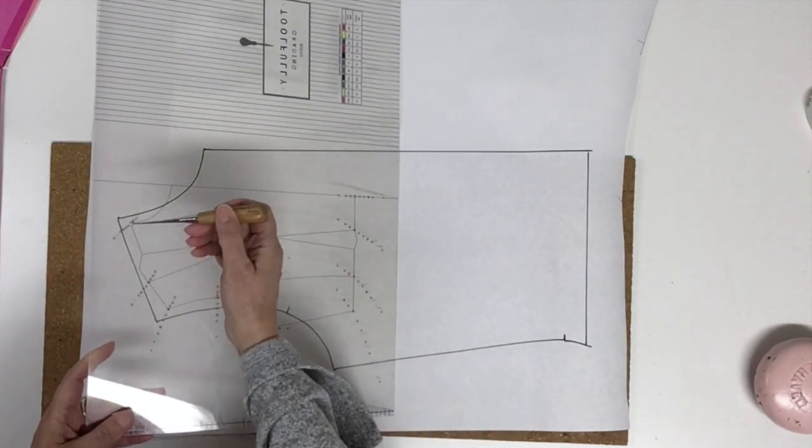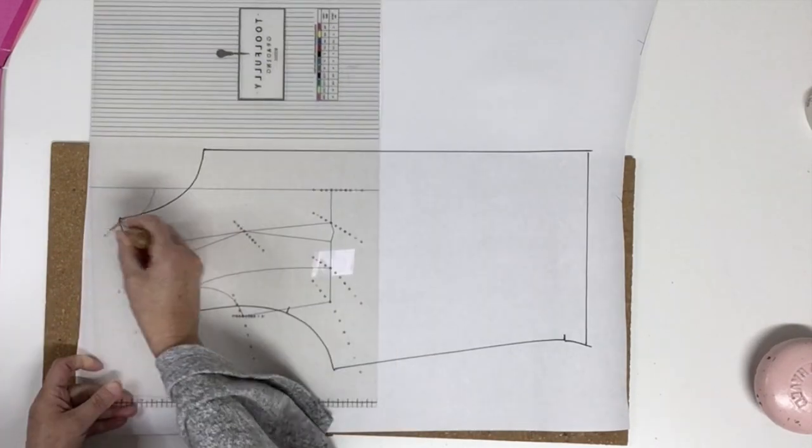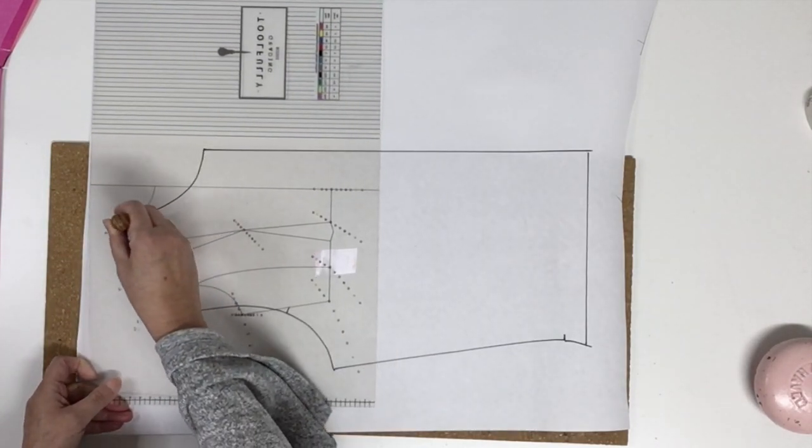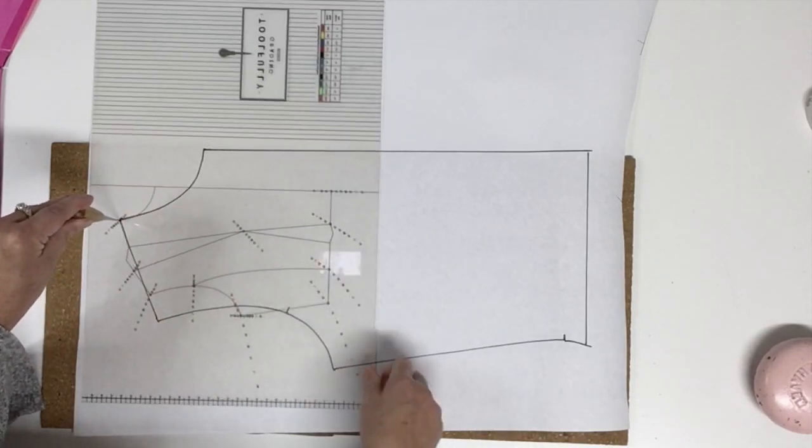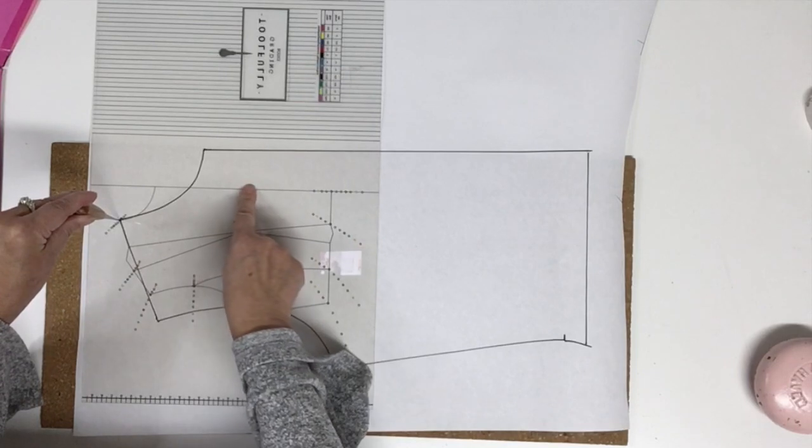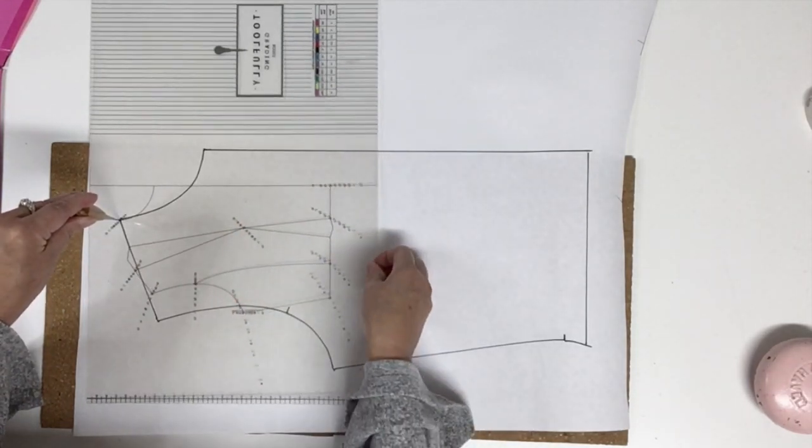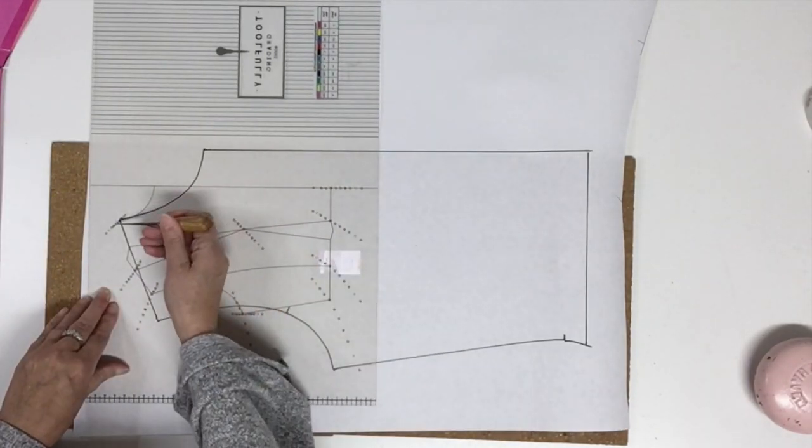Now I'm going to use my black dot and I put it right over the trace line on my paper, hold it there, and align the grain line of my ruler with the grain line of my pattern. Then I'm just going to mark my gray dot.